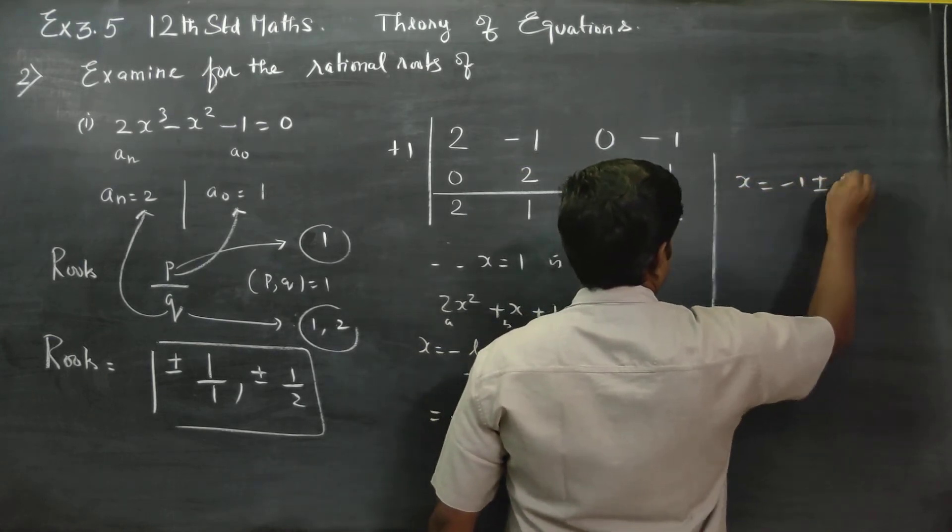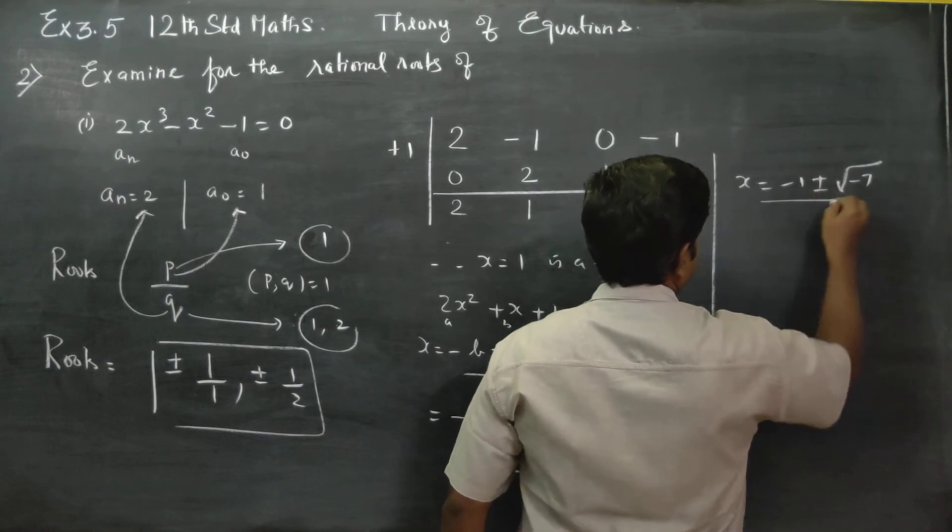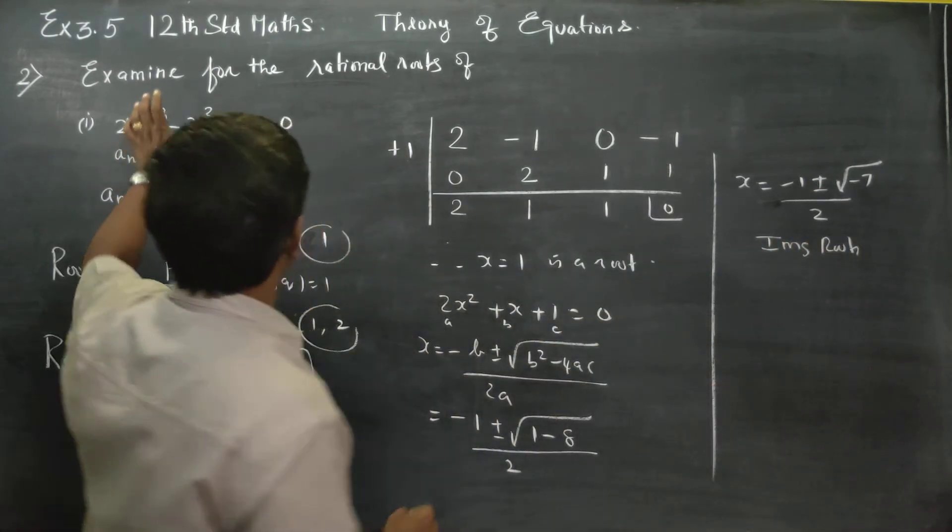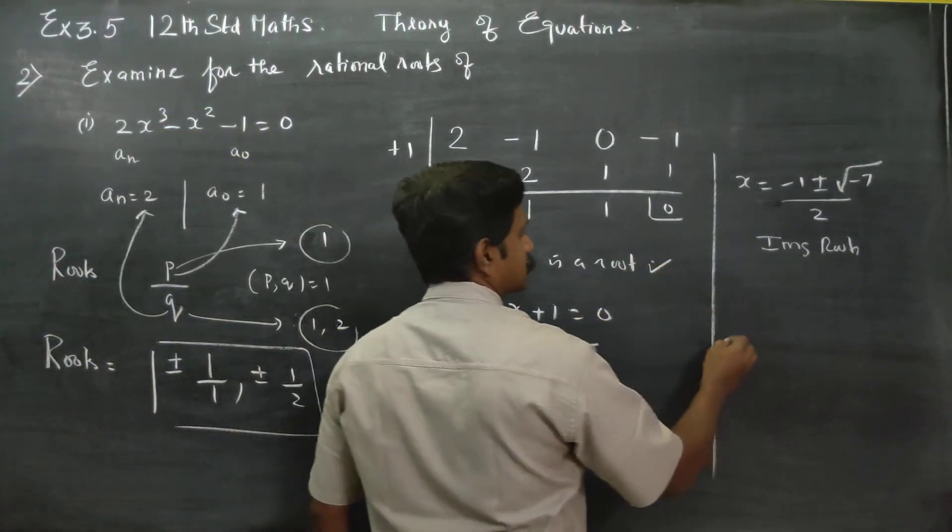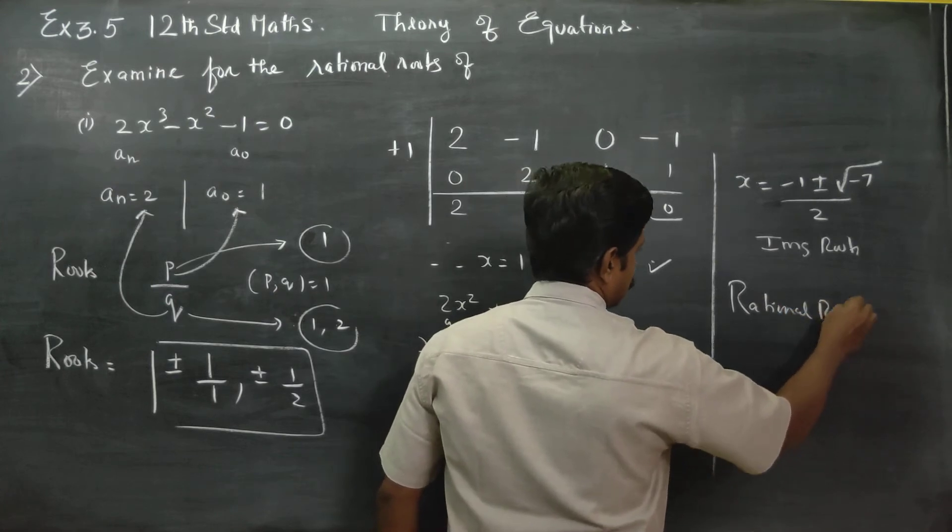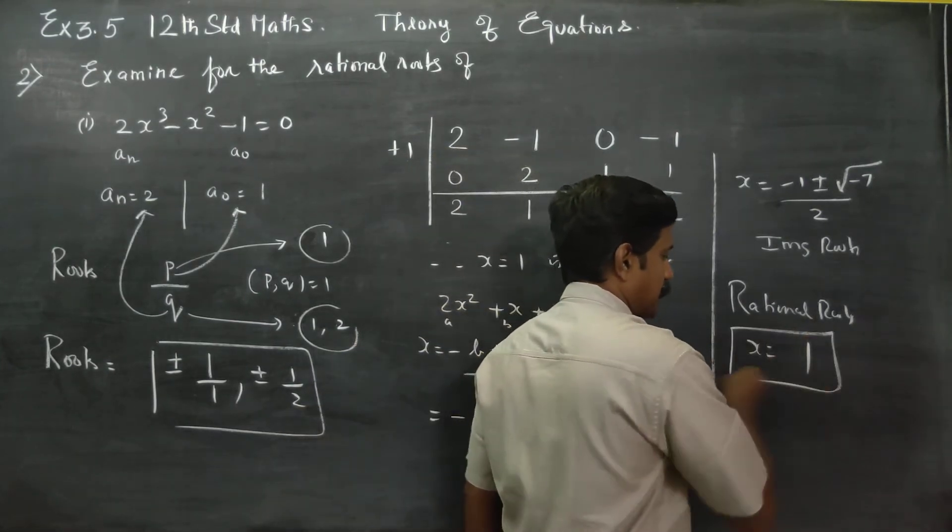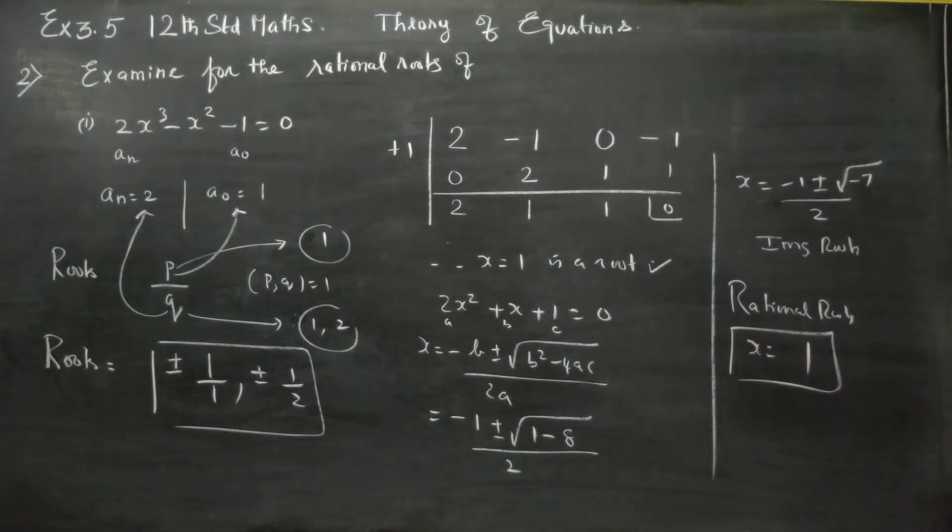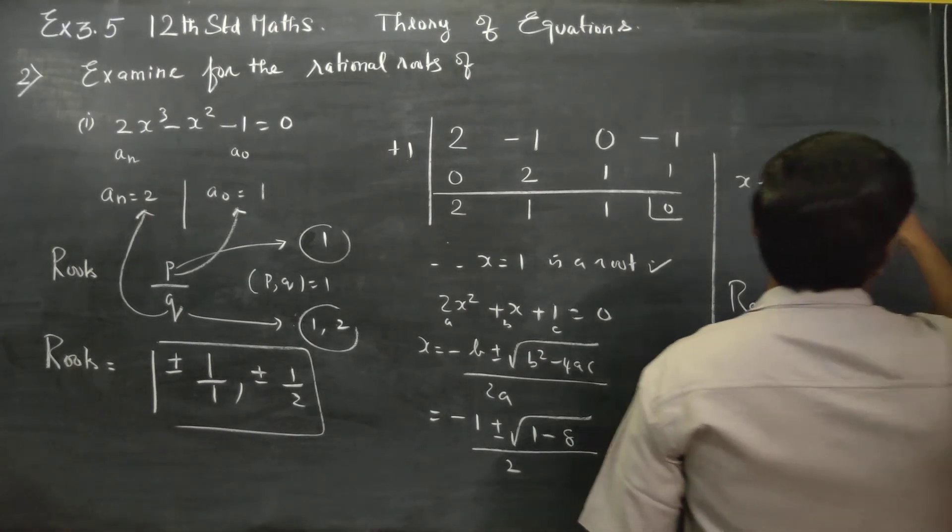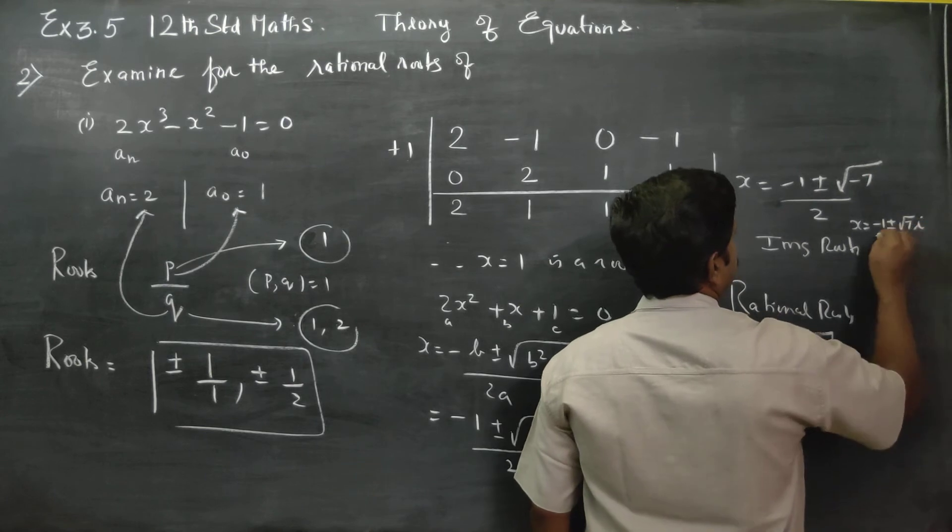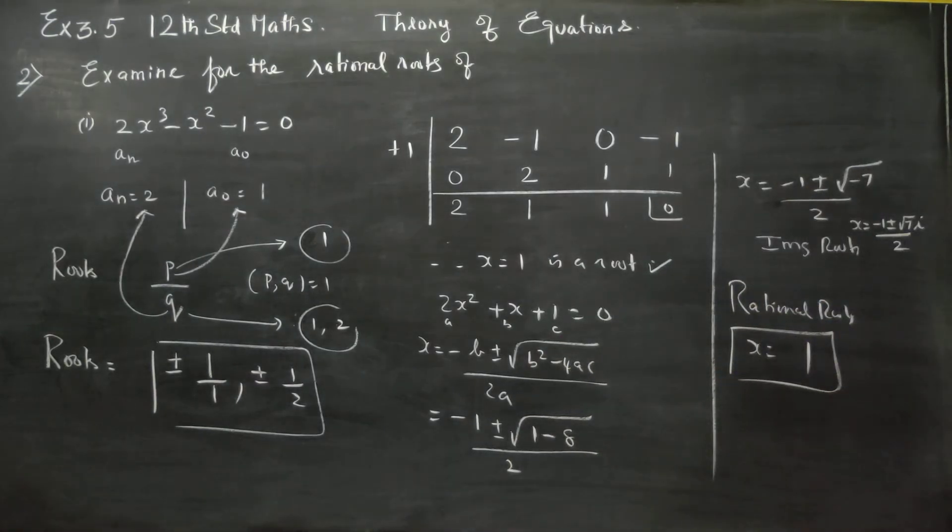Therefore, x = (1 ± √9) / 4 = (1 ± 3) / 4. Wait, let me recalculate: x = (-(-1) ± √(1 - 4(2)(-1))) / (2(2)) = (1 ± √(1 + 8)) / 4 = (1 ± 3) / 4. This gives x = 1 or x = -1/2. Both are rational roots.